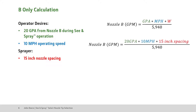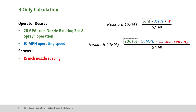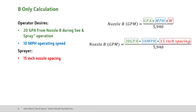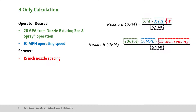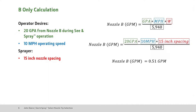To calculate our Nozzle B tip size flow rate in gallons per minute, take the See & Spray rate of 20 gallons per acre and multiply that by both our 10 mph operating speed and 15-inch nozzle spacing, then divide this by the constant 5940. This equates to a Nozzle B flow rate of 0.51 gallons per minute. After referencing the ExactApply nozzle selection chart within the John Deere sales manual, this equates to an 06 gray tip at 30 psi.